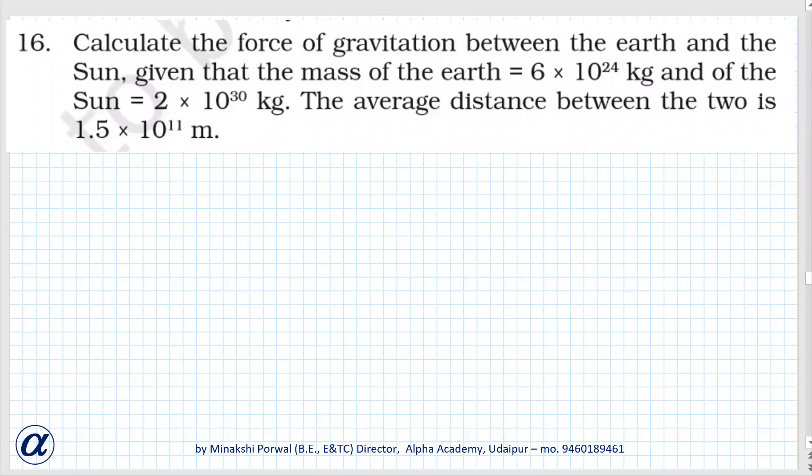Chapter 10 question number 16 NCERT back exercise. Calculate the force of gravitation between the earth and sun given the mass of the earth is 6 × 10²⁴ kg and of sun is 2 × 10³⁰ kg. The average distance between the two is 1.5 × 10¹¹ meter.